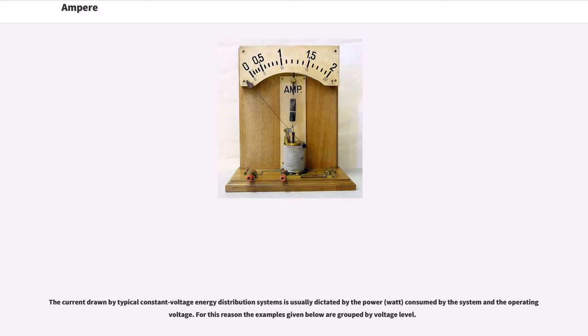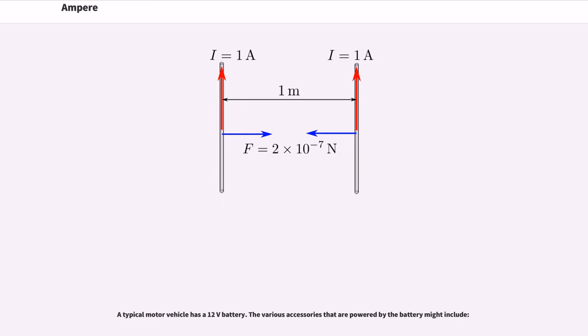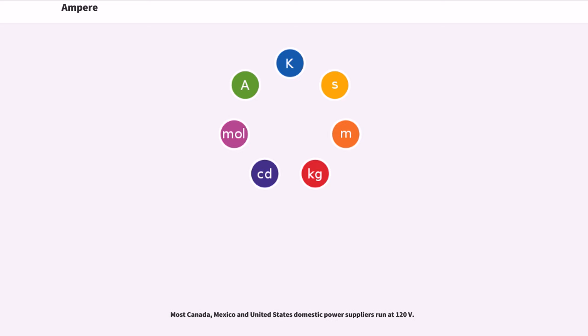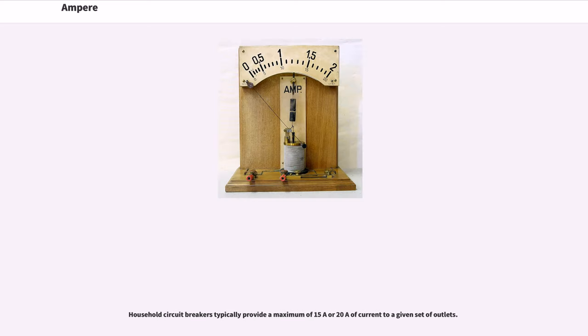For this reason the examples given below are grouped by voltage level. A typical motor vehicle has a 12V battery. The various accessories that are powered by the battery might include [examples]. Most Canada, Mexico and United States domestic power suppliers run at 120V. Household circuit breakers typically provide a maximum of 15A or 20A of current to a given set of outlets.